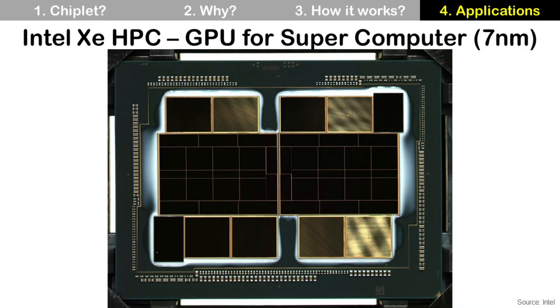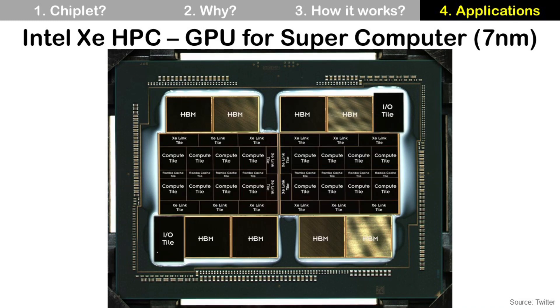This is Intel XE HPC, and it is a GPU using 7nm silicon technology for supercomputer. Now Intel is using this only in the lab. It has 47 components and includes two base tiles using Intel's 10nm super fin technology, 16 compute tiles using TSMC 7nm technology,